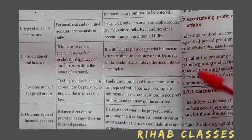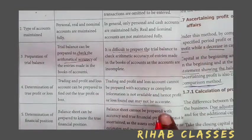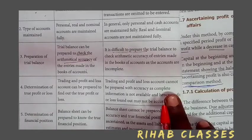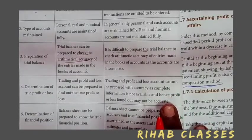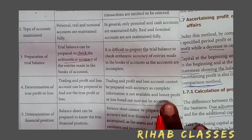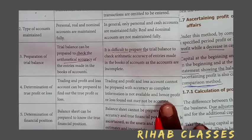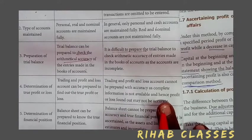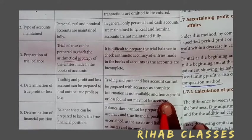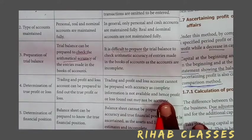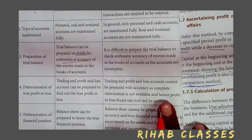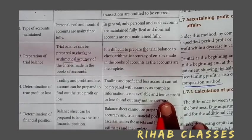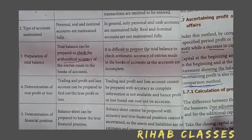Regarding the determination of profit or loss: in the double entry system, the trading and profit and loss account will be prepared with full information. Whereas in the single entry system, accurate profit and loss cannot be determined because the complete information is not available, making a true and fair view very difficult.